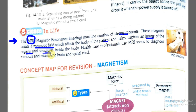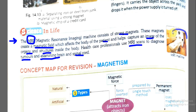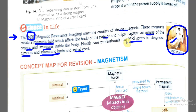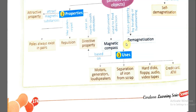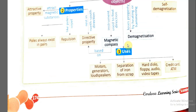Health care professionals use MRI scans to diagnose tumors and for examining the brain and spinal cord. Doctors use this for patients who have tumors, brain diseases, or spinal cord-related problems. The full form is Magnetic Resonance Imaging. This is a machine used to image the inside of the body. That completes our chapter on Magnetism, and we also have a concept map to summarize it.